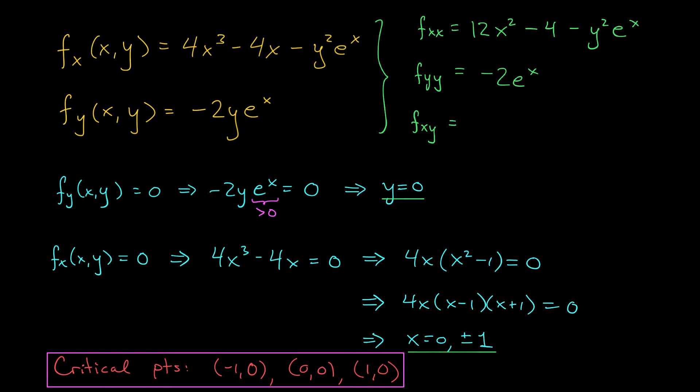Finally, to get my cross partial derivative fxy, I can either differentiate this term with respect to y, or this term with respect to x. In either case, you should get minus 2y e to the x.